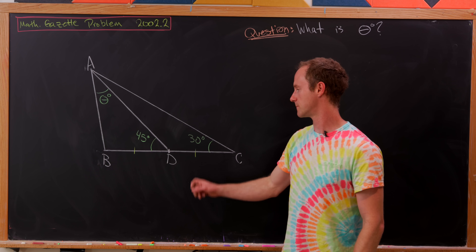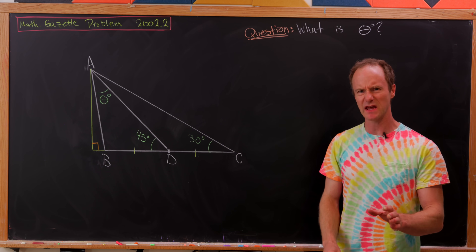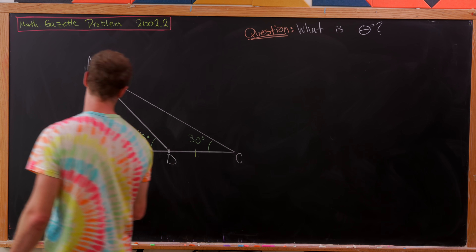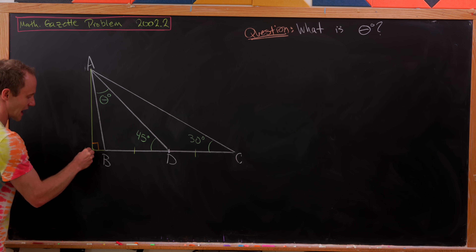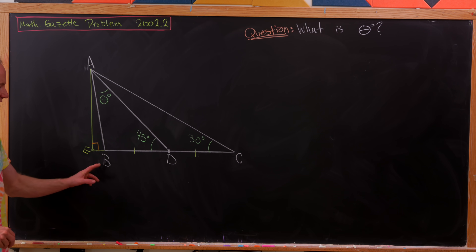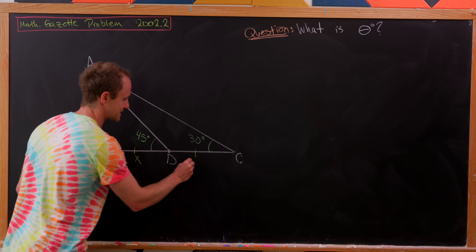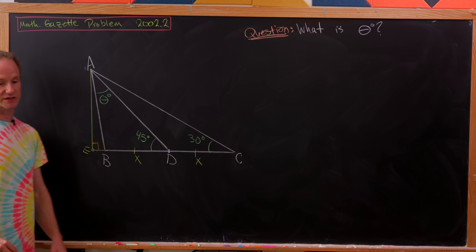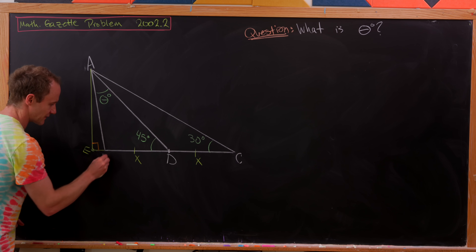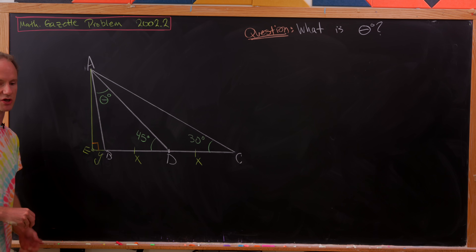We've got the extension of line segment CB so that we get a perpendicular up to A. We'll call this new point E, since we've already got A, B, C, D on the board. Since D is the midpoint of BC, the lengths BD and DC are equal — we'll call those x. The small segment from E to B we'll call y.